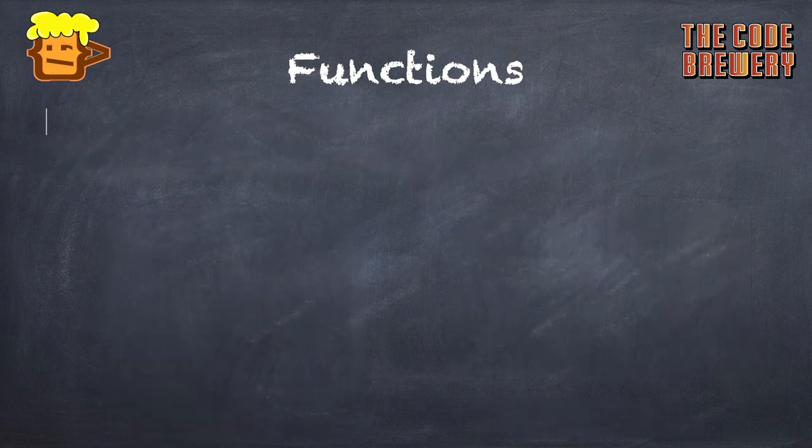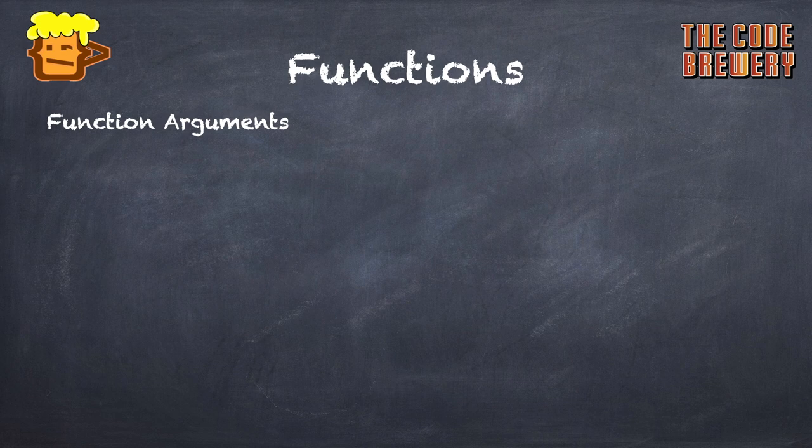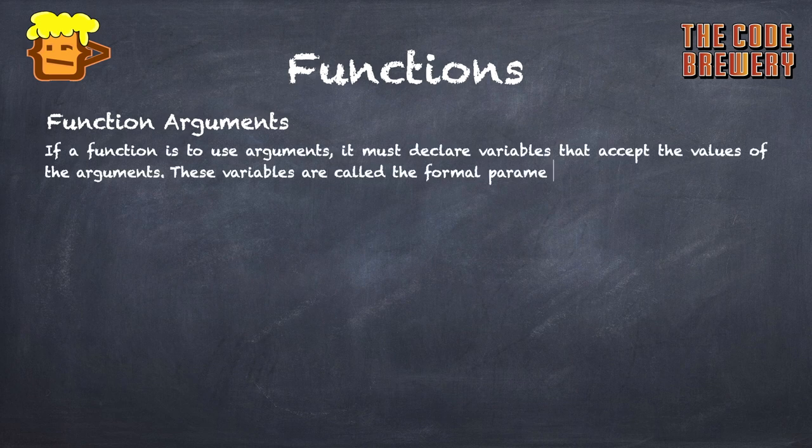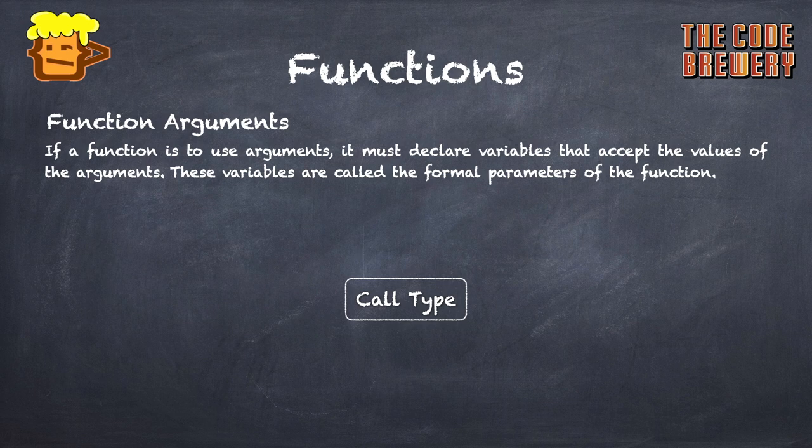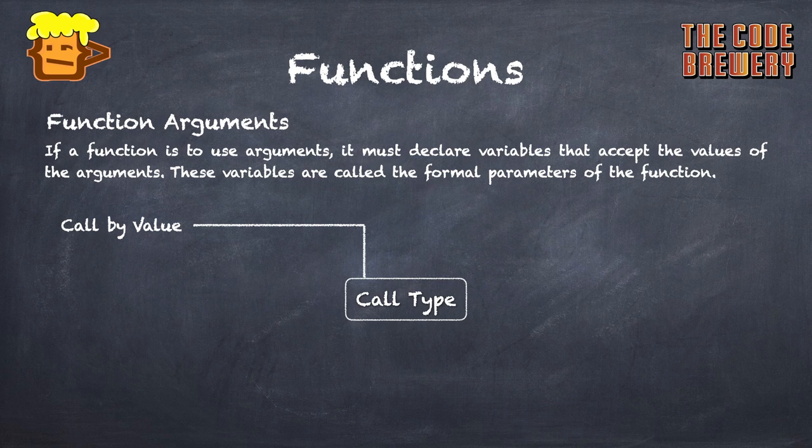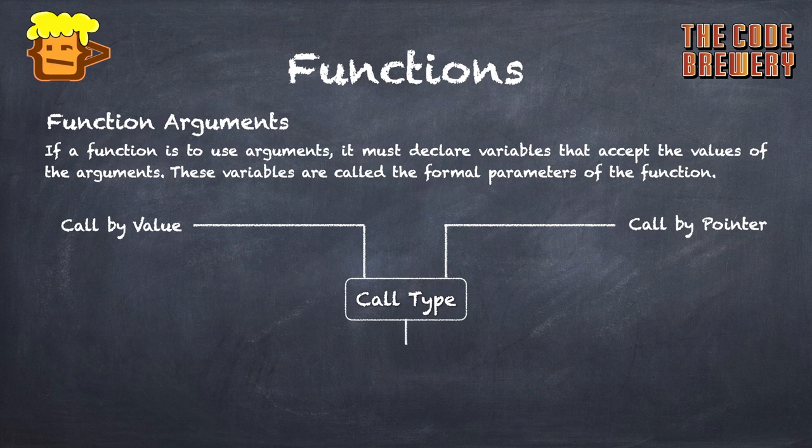We see about some function arguments. There are of three types which we will see. If a function is to use the arguments, it must declare variables that accept the values of that arguments. These variables are called formal parameters of a function.